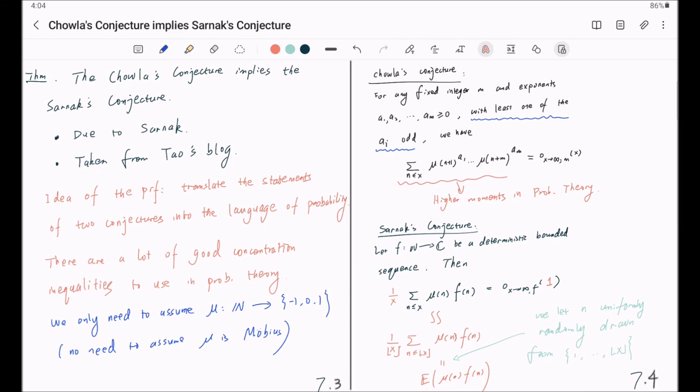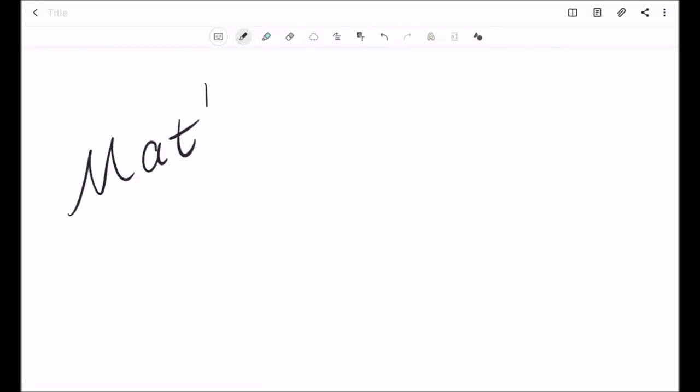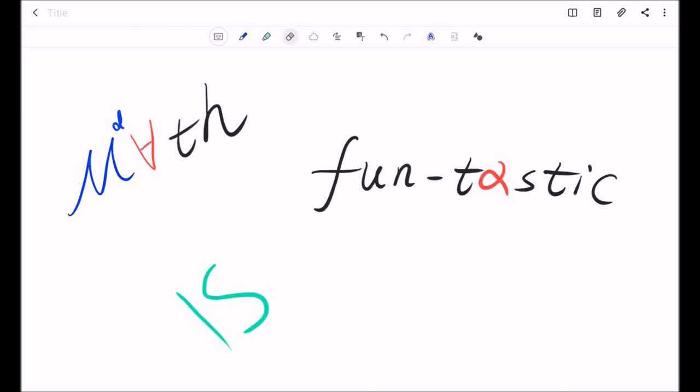In my opinion, this is the true beauty of this proof. Should Chowla's conjecture fail for Möbius function, we may still conjecture it is true for some other type of functions. And once that is true, you get an analog to the Sarnak conjecture as well, for that corresponding function. As long as this function is from natural numbers to negative one, zero, one.